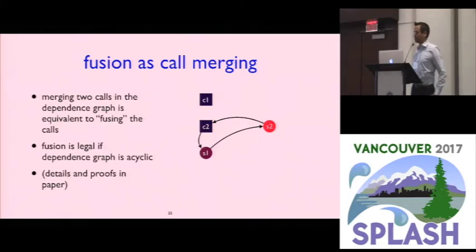But when I try to merge together the two calls to n.right, so I merge together the two C2 nodes, I get a cycle in the dependence graph. And what this means is that there's no way to do this without violating some dependencies. So the final fuse dependence graph we get looks like this. We were able to fuse the calls to n.left and we were not able to fuse the calls to n.right.